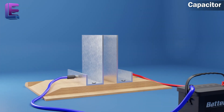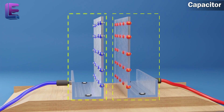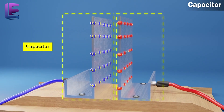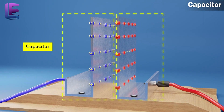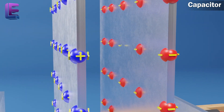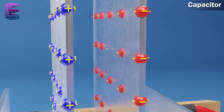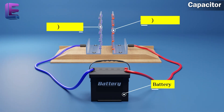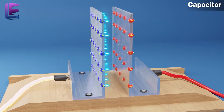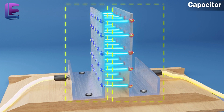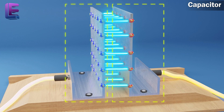Capacitors. A capacitor is a system of two conductors separated by an insulator. The conductors usually have equal and opposite charges, giving rise to a difference in potential. The conductors are charged by connecting them to opposite poles of a battery. The capacitance of a capacitor depends on the geometric configuration of the conductors and the dielectric ability.